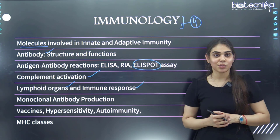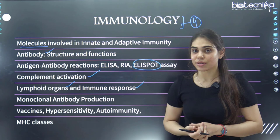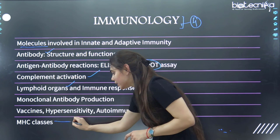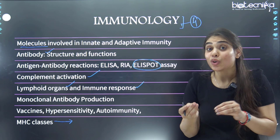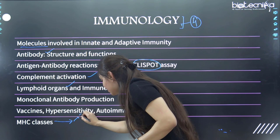Next, study vaccines, hypersensitivity, and autoimmunity — just types and examples related to these. The last topic is MHC classes. For MHC class 1 and 2, just know the differences between them and what fragments are obtained if these classes are cleaved in electrophoresis. Simple. You can do it.